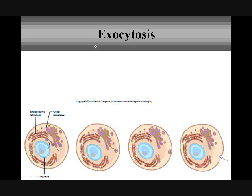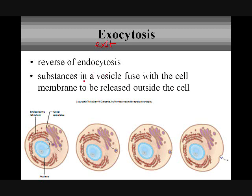We also have exocytosis, which is kind of the opposite of endocytosis — it's exiting the cell. This is when a substance in a vesicle actually joins the cell membrane and gets released out. A vesicle coming from the Golgi apparatus is pushed toward the cell membrane, where it joins and becomes a part of the cell membrane, opens up, releases everything, and becomes continuous with the cell membrane.